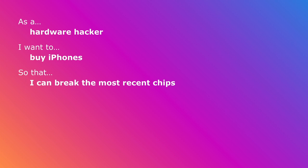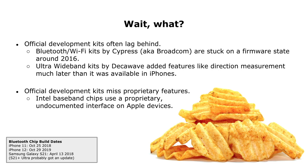As a hardware hacker, I want to buy iPhones and give Steve Jobs all my money so I can break the most recent chips. If you buy a dev kit from normal vendors, you would get very old dev kits in a lot of cases. So you have to buy something else, like a smartphone, and you get a pretty decent and recent chip, including a stack that works — not just a dev kit where you have to program each and every packet, but integrated into a wireless stack that just works.